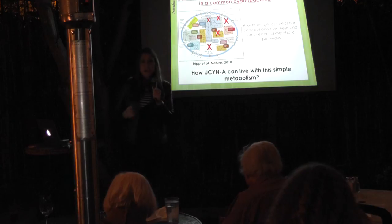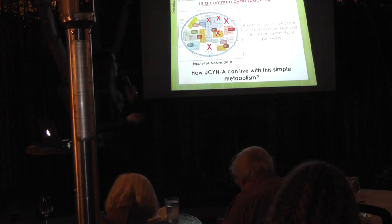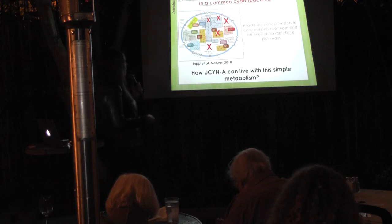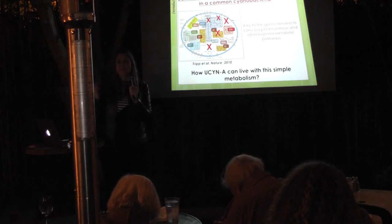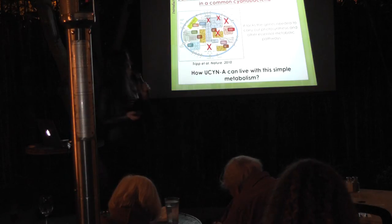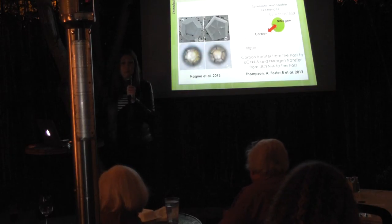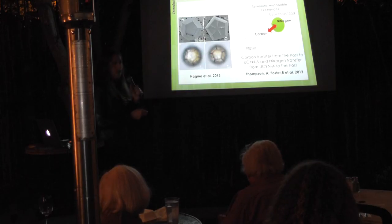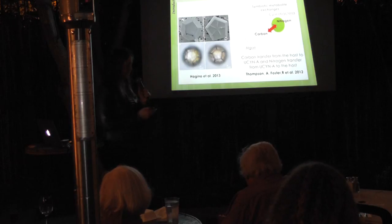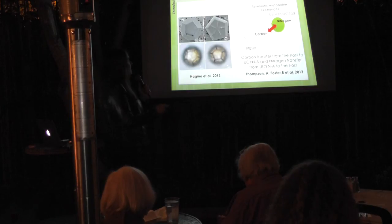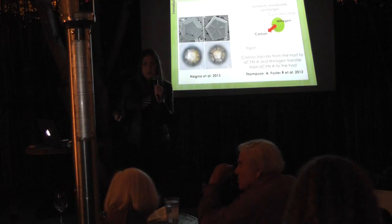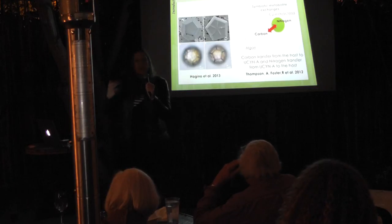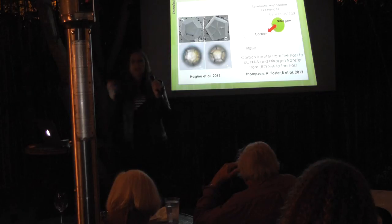This cyanobacteria is unusual because it lacks many genes present in common cyanobacteria — including genes that carry out photosynthesis. How is it possible that this cyanobacteria can live? The answer is because it lives in symbiosis. A few years ago, Anne Thompson and Rachel Foster demonstrated a nutrients exchange: the host gives carbon to the cyanobacteria, and the cyanobacteria — which can fix nitrogen — gives nitrogen to the host. There is an exchange, a mutualism — they both win. They each have the nutrients they need.